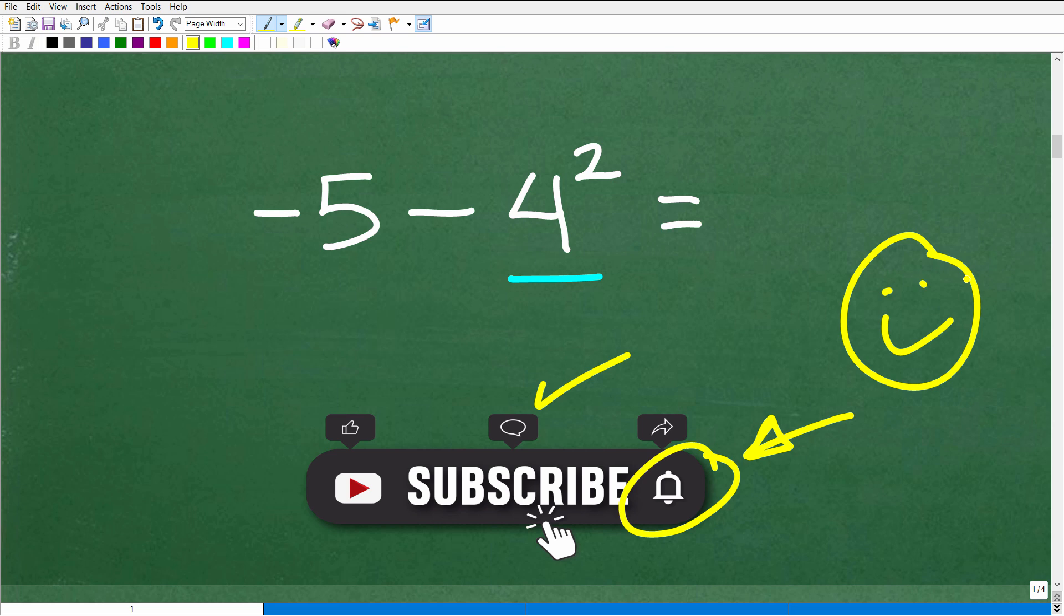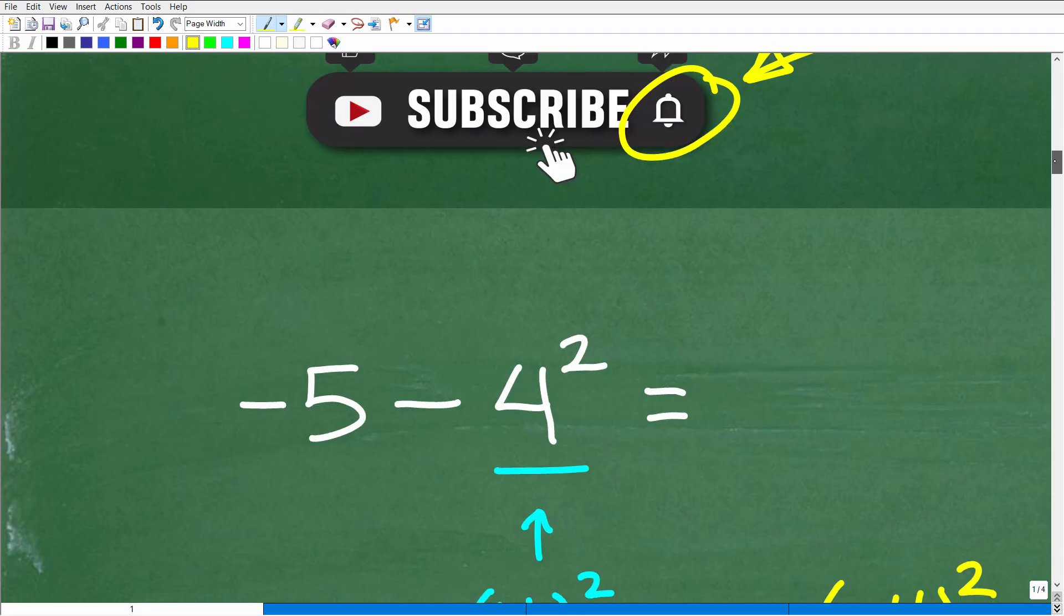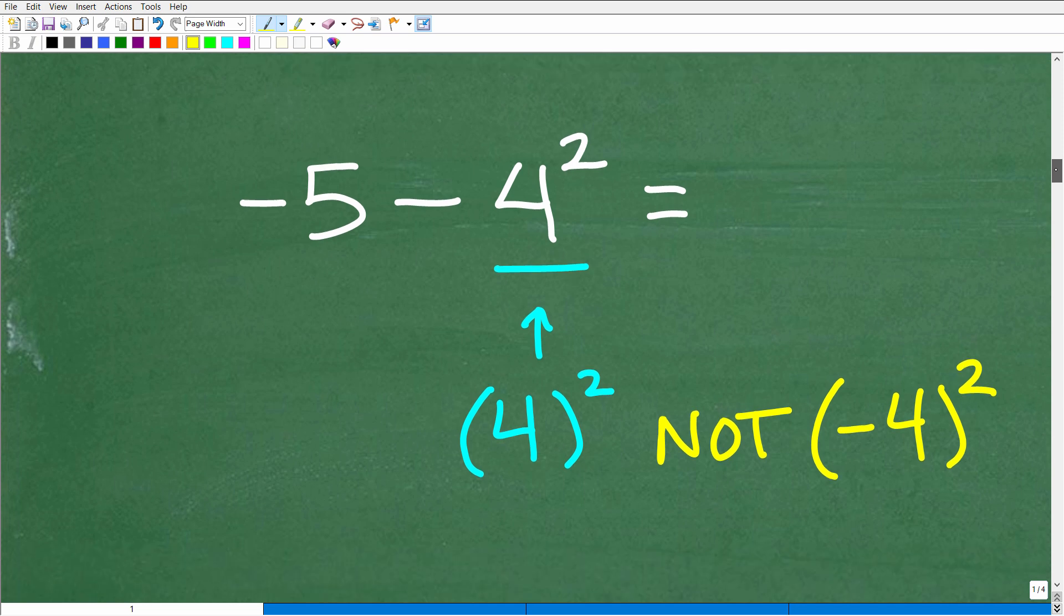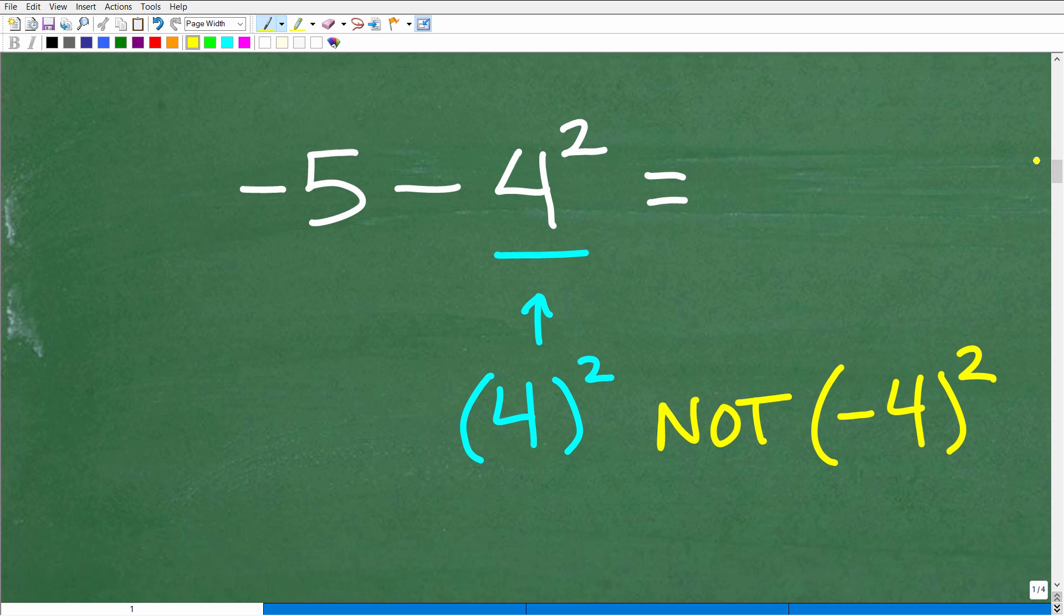Okay, now before I show you this, this is the part of the problem where a lot of students will tend to make an error. Let's go ahead and take a look at that error right now. All right, so negative 5 minus 4 squared. So this right here, the power part is 4 squared. That's what we need to do, not negative 4 squared, okay?